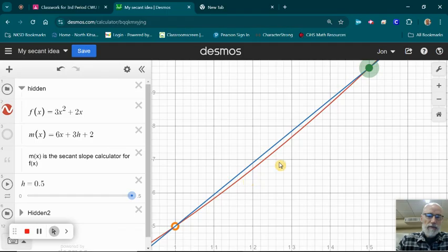So what we did is the difference quotient to get an expression that would tell us what the slope of the secant is. And the smaller that you make h, the closer these two points are going to get together and the closer you are to finding the slope of the tangent line.